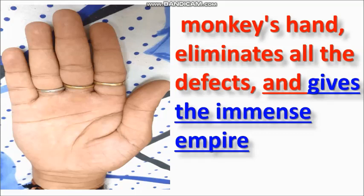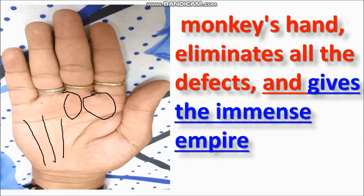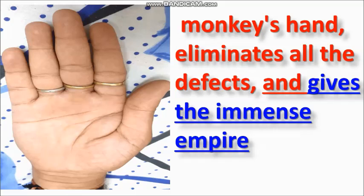Now I am showing you what is monkey hand and what criteria to check. In this picture, as you can see in this palm, there is no luck line, there is no Sun line, there is no Mercury line, and at the same time the palm mounts — Jupiter mount, Saturn mount, Apollo mount, and Mercury mount — are all very flat. There is no luck line, no Mercury line, no Sun line, and this life line is also short.